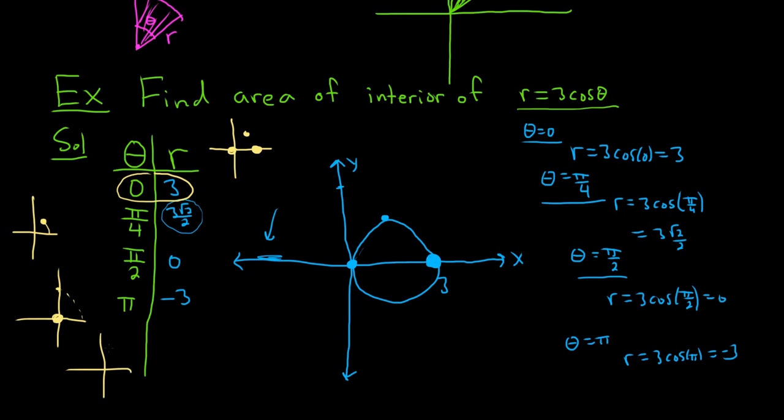And your last point, theta is pi, so you're over here. But R is negative 3, so you go the other way, so you're back to where you started. That means we must have gone down this way and traversed the circle. So from 0 to pi, the entire thing is traced out.